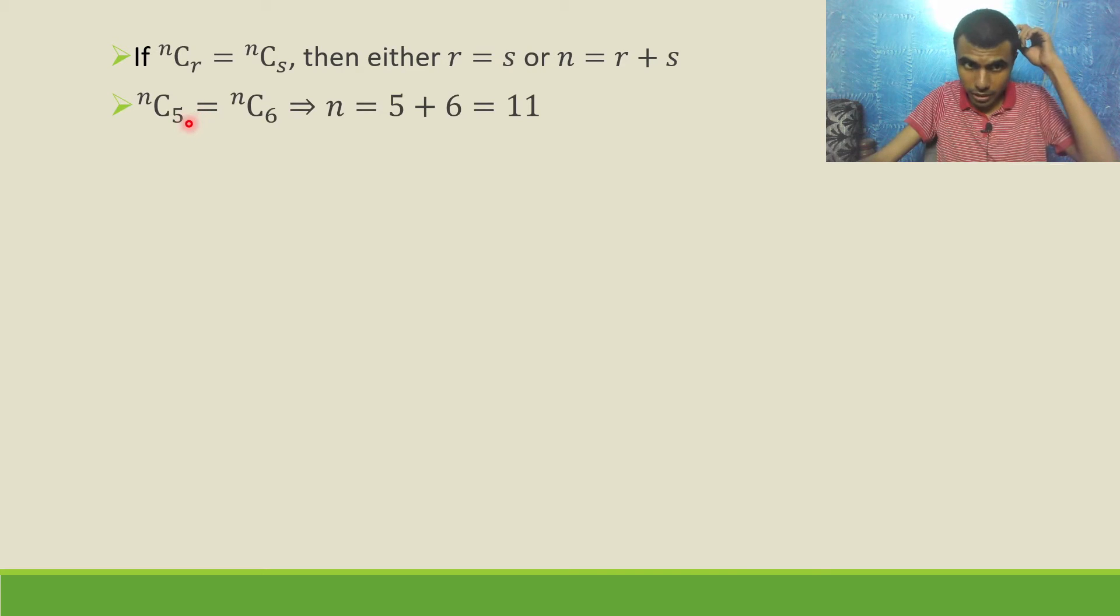Here, analyze carefully. NC5 equal to NC6. Are these two equal? Is 5 equal to 6? No. So what is the other condition? N must be equal to R plus S. That means N must be equal to 5 plus 6. That means N is 11.